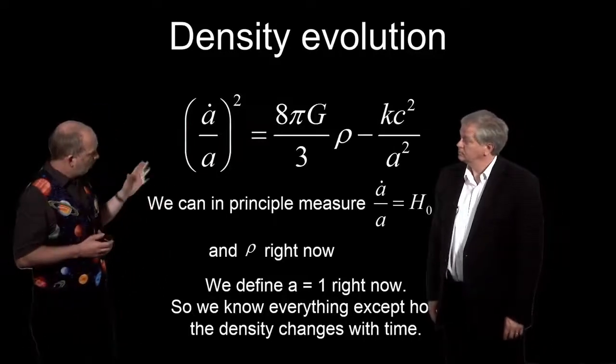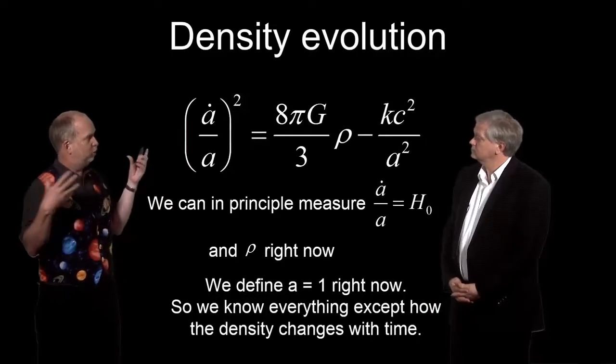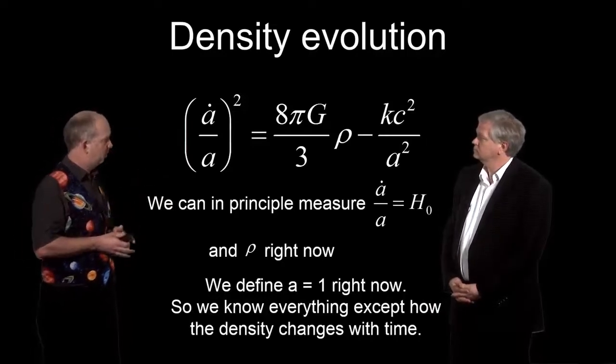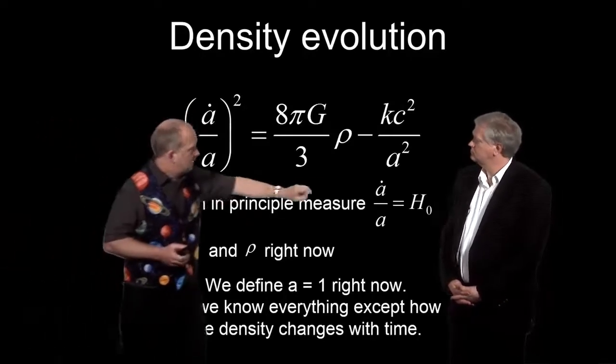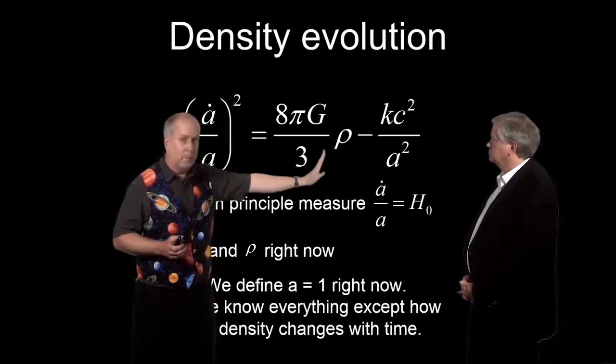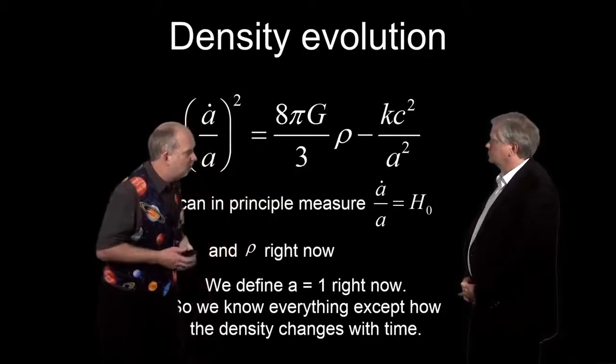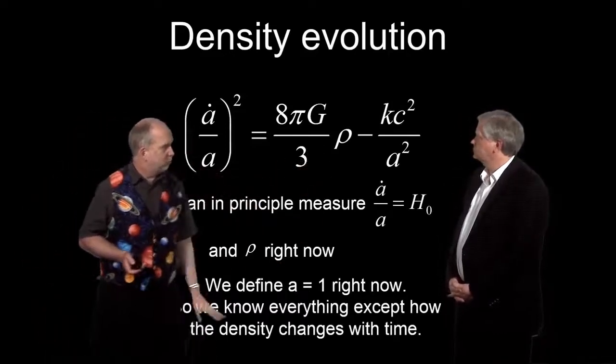Now let's look at how we solve the whole Friedman equation. We've got the values right now, but how is it going to change as the universe gets younger or older? We know what this is today. The crucial thing is going to be how the density changes. We can in principle measure the density right now, but how is the density going to change as time goes forwards or backwards? That's the one thing we need to know to solve this equation.